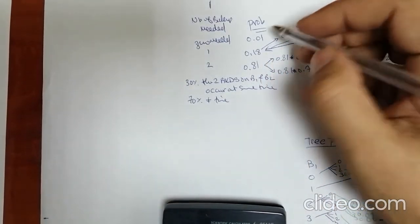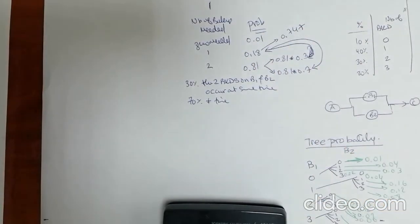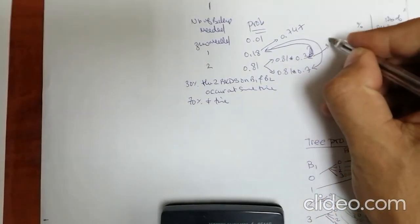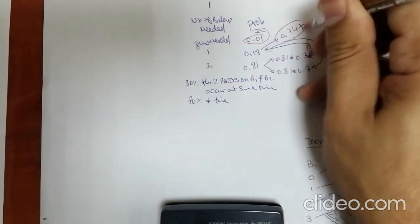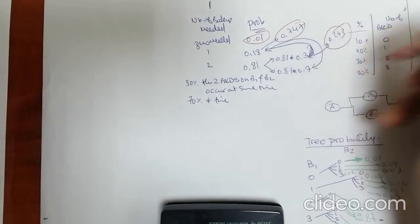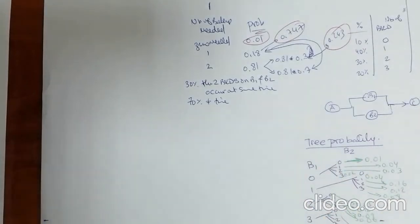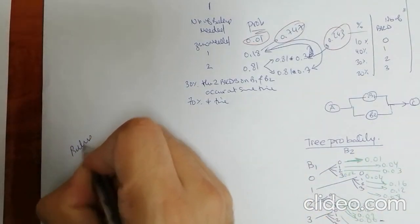So the new values are: zero backup systems needed with probability 0.01, one backup system needed with probability 0.747, and two backup systems needed with probability 0.243 (which is 0.81 times 0.3). With these updated probabilities, we now proceed to construct the decision tree.